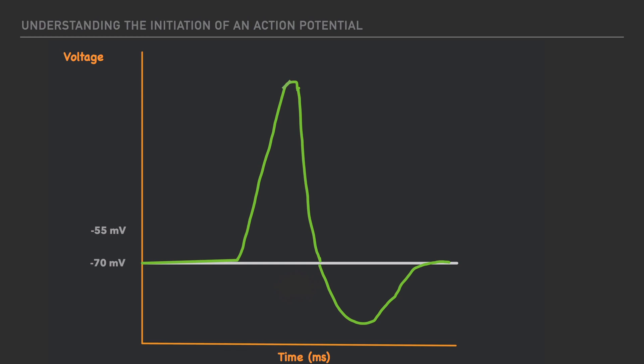So it's here, at about negative 55 millivolts, that we begin to see a shift away from the resting membrane potential. And as the value increases, and as we approach a value of zero millivolts, we begin to have what's called depolarization.